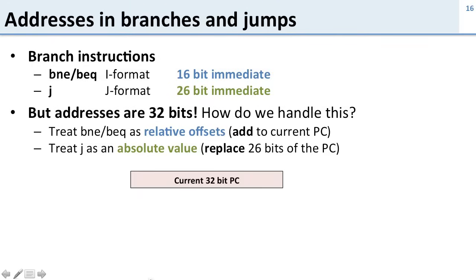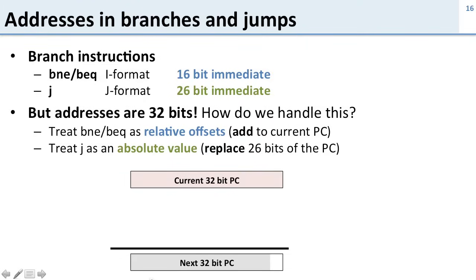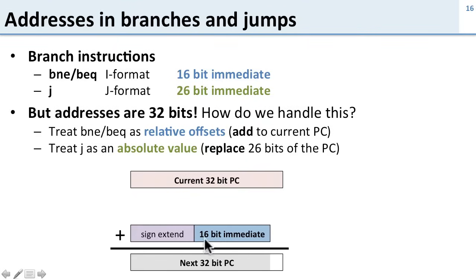Here's our current 32-bit program counter — the address of the current instruction in memory. For a branch equal or branch not equal I-format instruction, we want to calculate the next 32-bit PC. We take the 16-bit immediate, sign extend it to 32 bits, and also shift it left by two bits, placing zeros in the lowest two positions. We do this because instructions are word-aligned — they're always multiples of four — so those two low bits are always zero and there's no point encoding them.